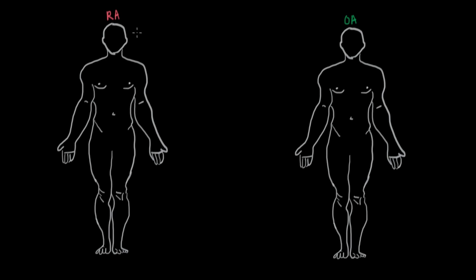We'll talk about all the different symptoms, but I want to make this a logical discussion. Keep thinking back to the cause of these two diseases and why their symptoms differ. In rheumatoid arthritis, it's always going to be autoimmune — the body's attacking itself, a whole-body process. Whereas in osteoarthritis, we're dealing with overuse, usually in elderly people or people carrying extra weight, weighing down their joints.